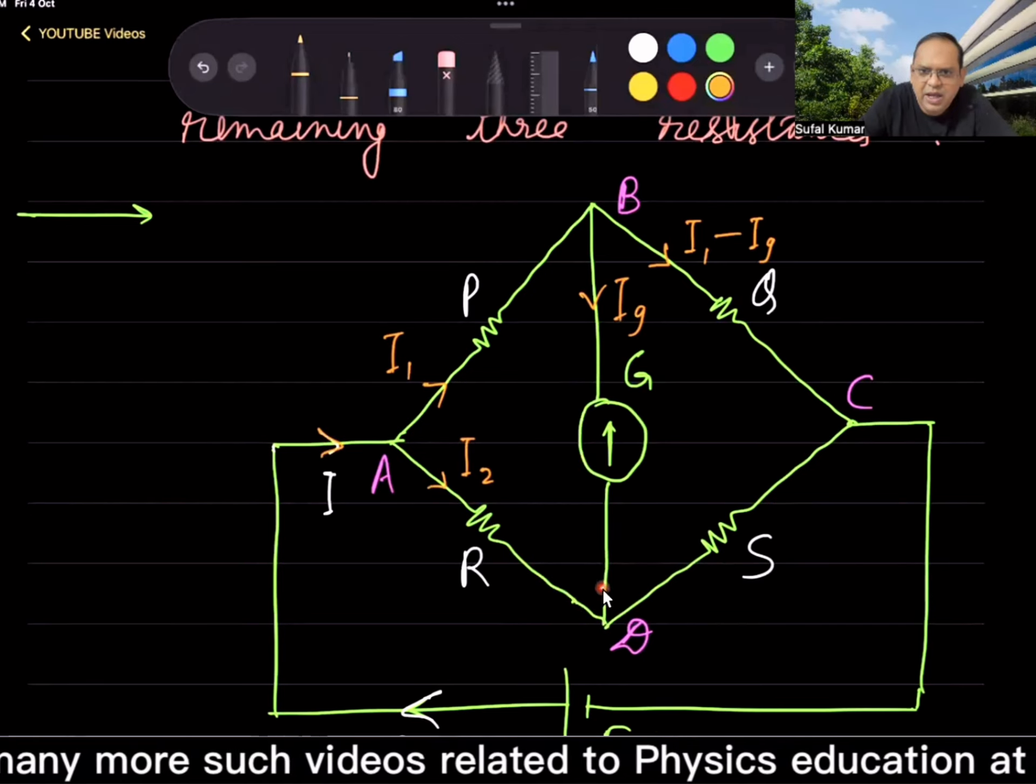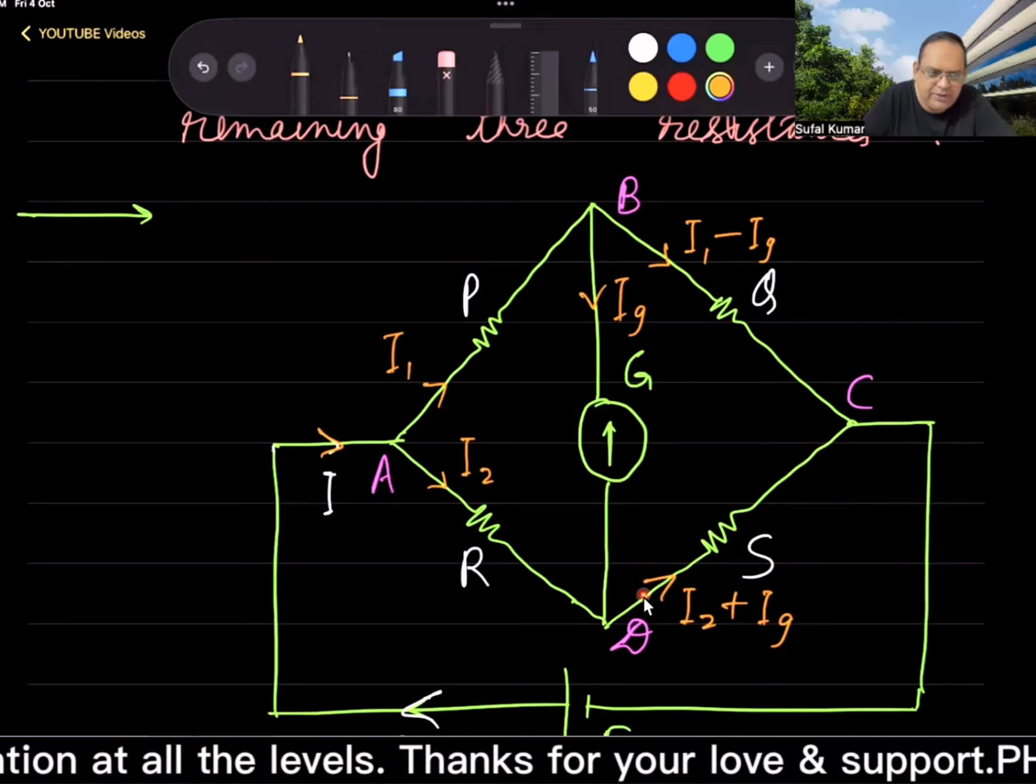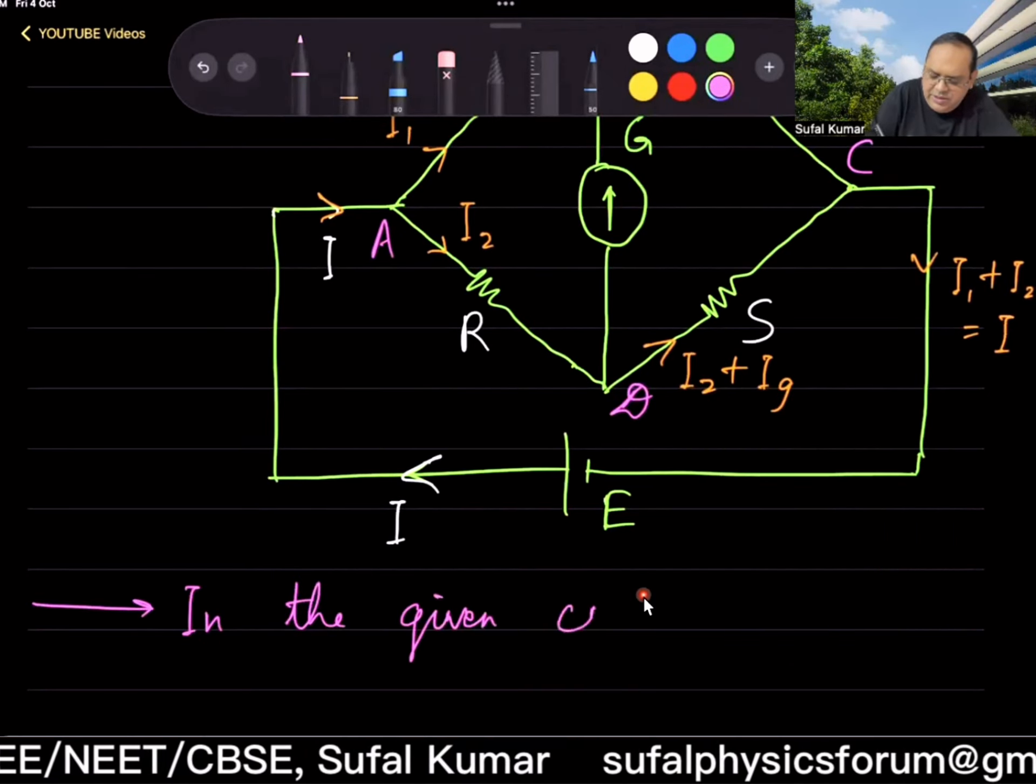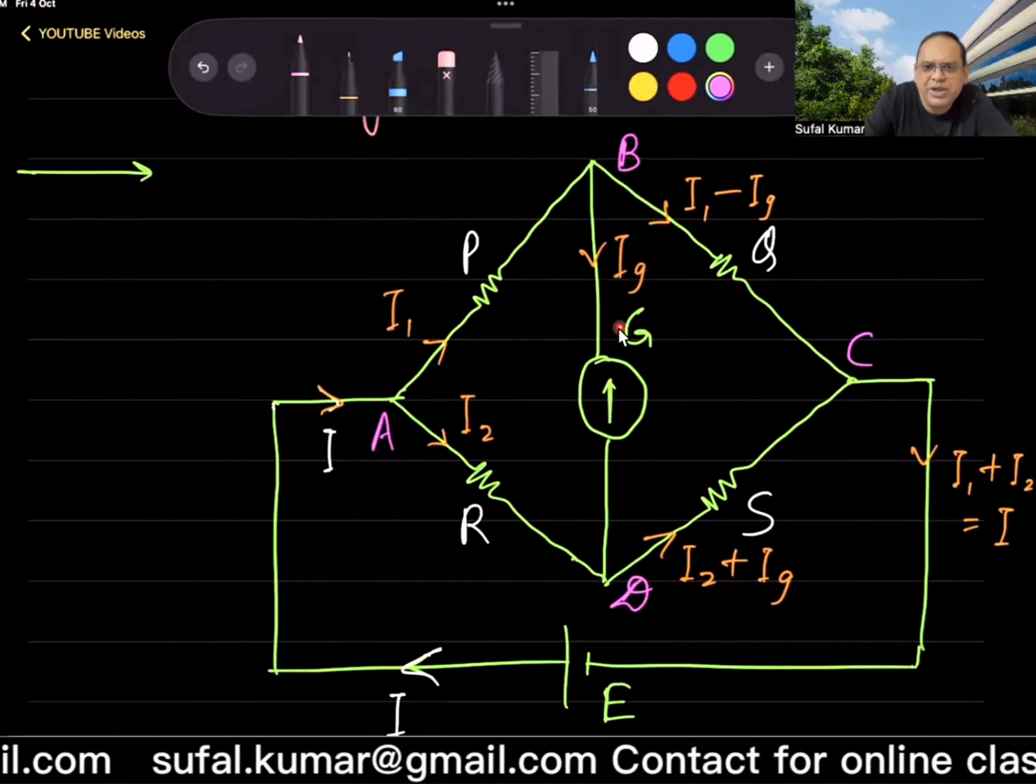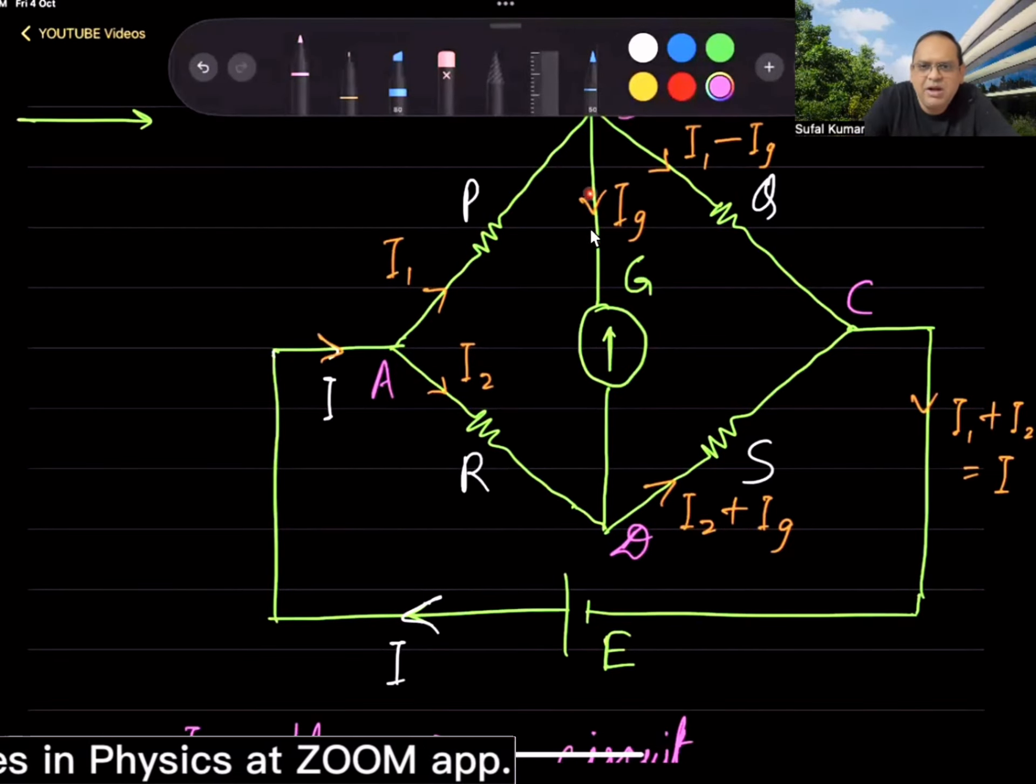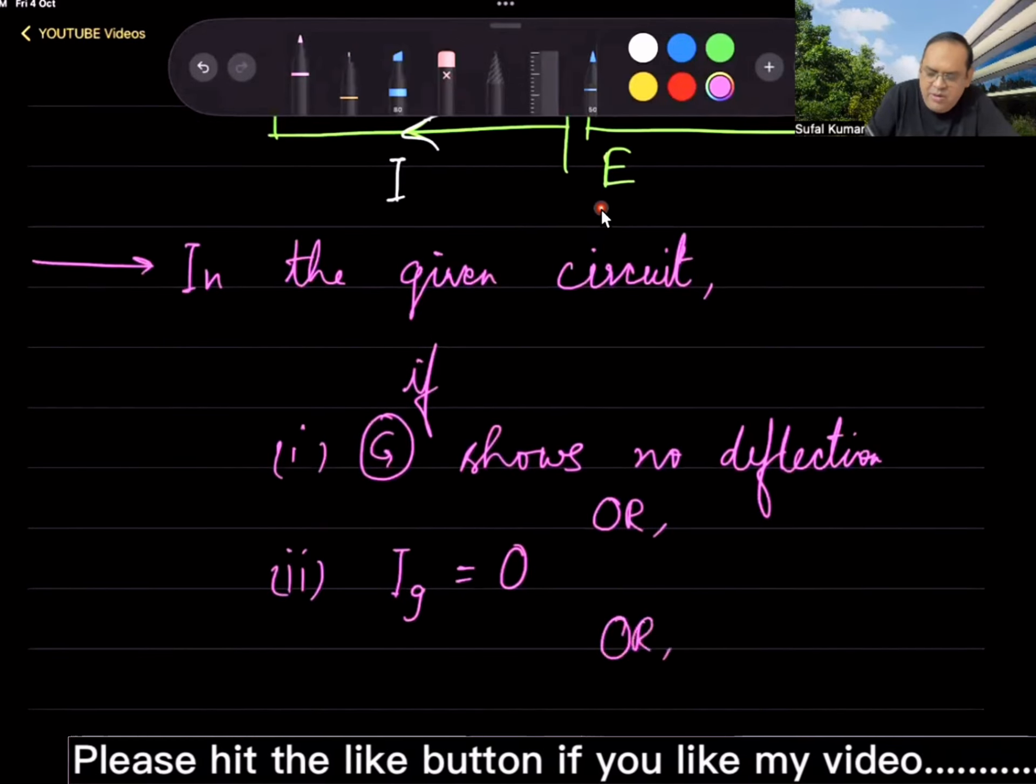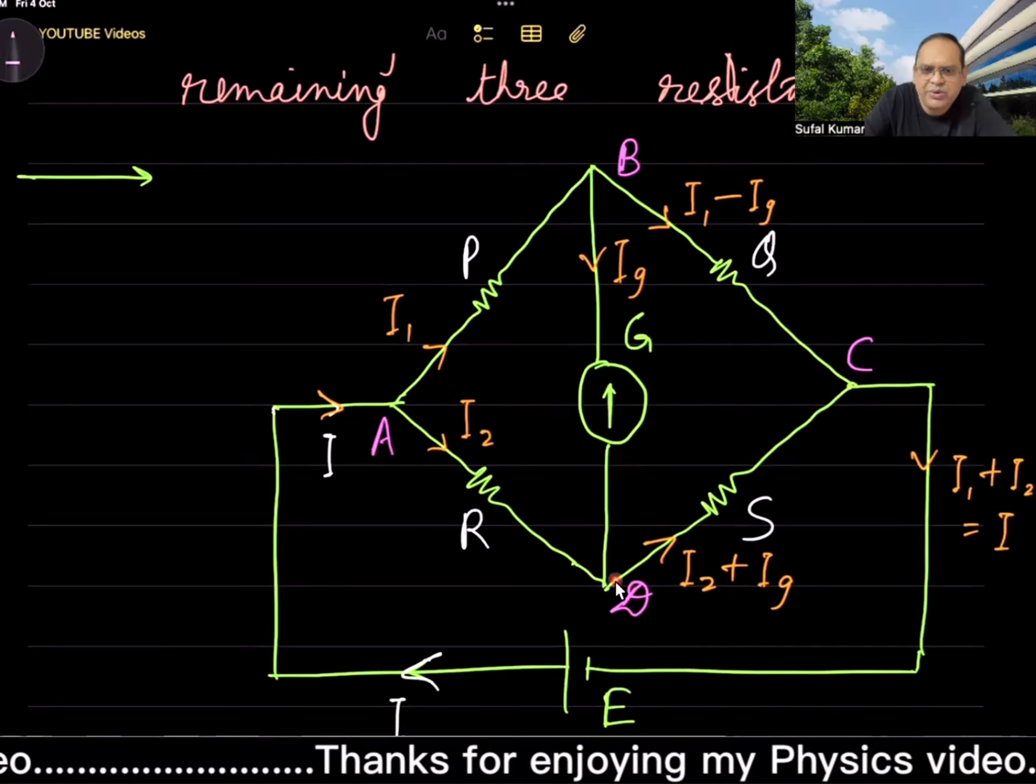This is galvanometer. This particular type of circuit—this particular shape circuit which has four resistances in the given pattern: P, Q, R, S, and this middle branch consisting of galvanometer. If galvanometer shows no deflection, that is Ig = 0.